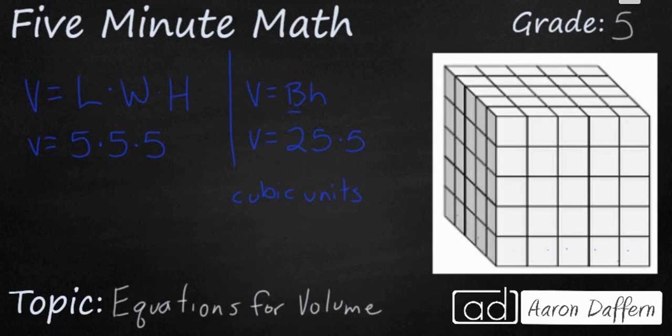If you use the equation on the left, you would have counted the length as 5, the width as 5, and the height as 5. Or if you use the equation on the right, you would have combined the length and width into a base of 25, and a height of 5. Anyway, you look at it, it's 125 cubic units. If you noticed it was a cube, you could have used this equation, volume equals side times side times side.